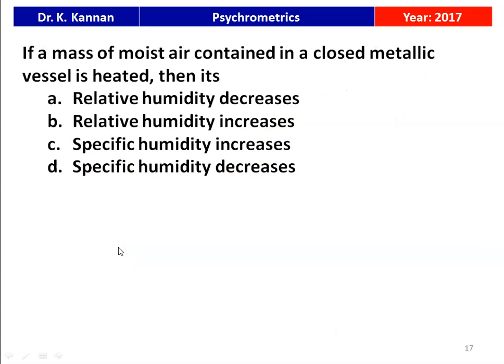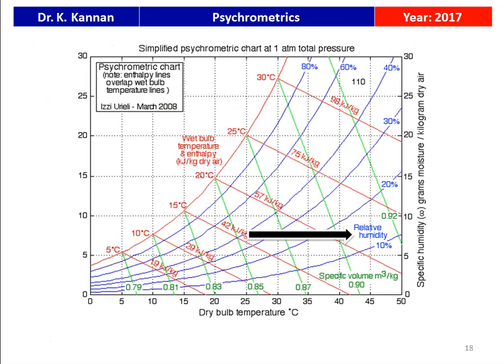The next question is from the 2017 question paper. If a mass of moist air contained in a closed metallic vessel is heated, does relative humidity decrease, relative humidity increase, specific humidity decrease, or specific humidity increase? The correct answer is relative humidity decreases. From the psychrometric chart, when the air is heated, relative humidity decreases.